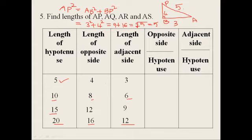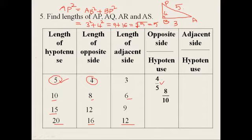Now we have to use the opposite side by hypotenuse ratio. So we are getting 4 by 5 for the first triangle. Opposite side is 4, hypotenuse is 5, so 4 by 5. Similarly: 8 by 10, then 12 by 15, then 16 by 20. For the second ratio, adjacent side by hypotenuse: adjacent side is 3, so 3 by 5.